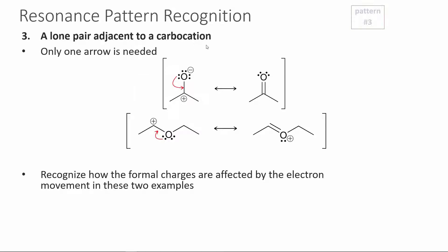Pattern: a lone pair adjacent to a carbocation. Here, the lone pair from the oxygen is adjacent to a carbocation, so the electrons from the lone pair can collapse to form a new pi bond. On the left we have a molecule with one negative and one positive charge balancing out; on the right is a neutral molecule. Another example: the oxygen lone pair is attached to an sp3 carbon so it can't move there, but because we have a carbocation — an empty p orbital — the electrons from the oxygen can form a new pi bond between the oxygen and carbon, moving the positive charge from the carbon to the oxygen.